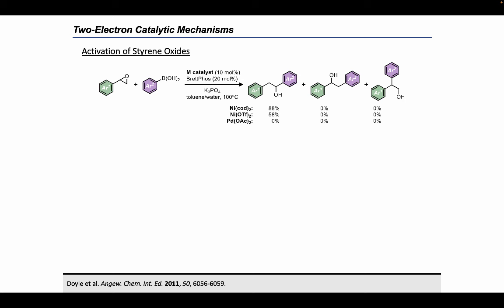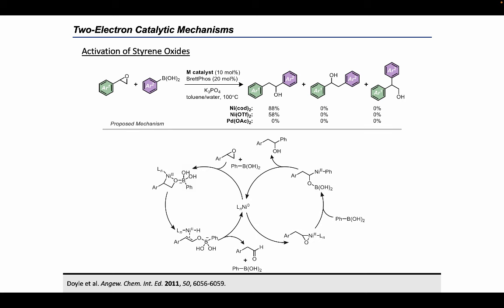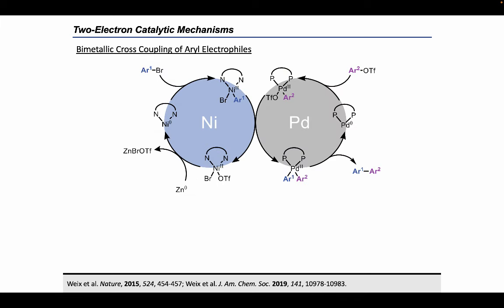The observed regiochemical outcome of this coupling can be explained by the following mechanism, which begins with a nickel-catalyzed ring-opening isomerization to yield the corresponding phenylacetaldehyde. Reinsertion leads to a three-membered oxanickelacycle, which undergoes transmetallation with the boronic acid, followed by reductive elimination to yield the observed benzylic alcohol. Finally, a unique sp2 coupling of two aryl electrophiles developed by the Weix group showcased the potential of synergistic nickel-palladium bimetallic catalysis.